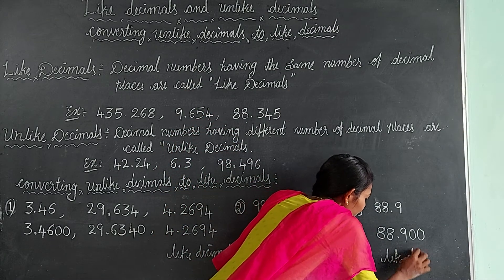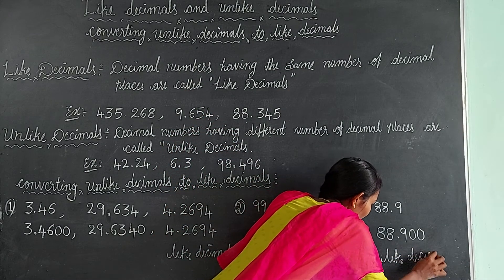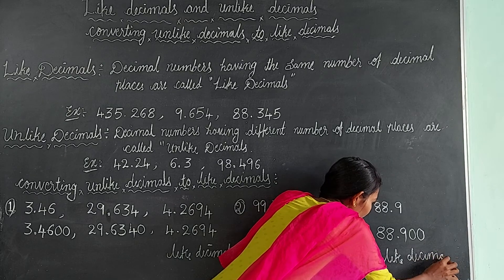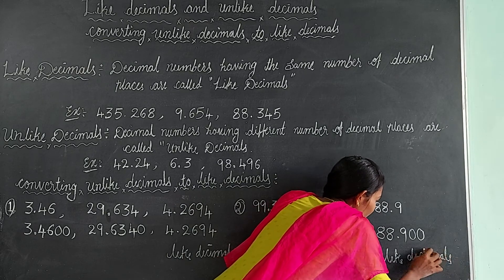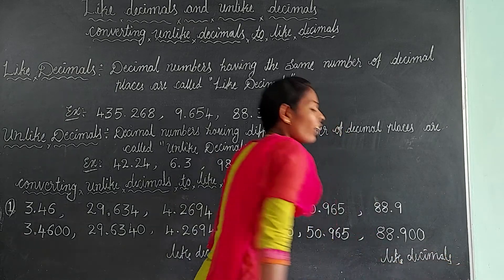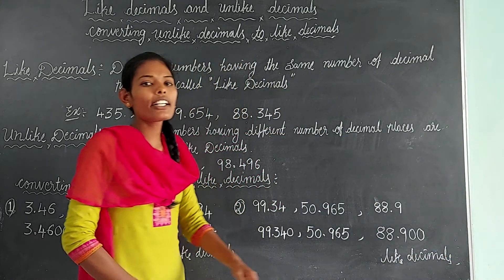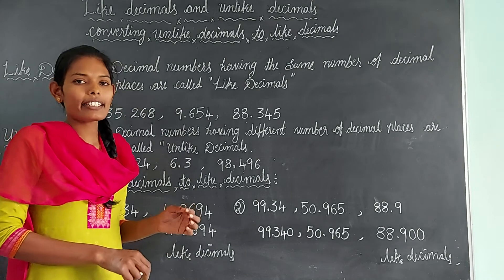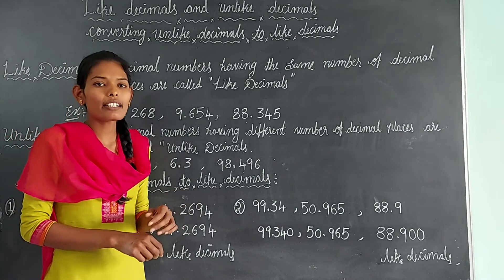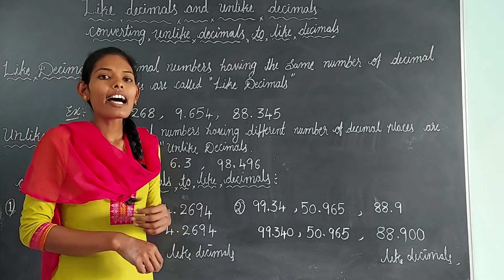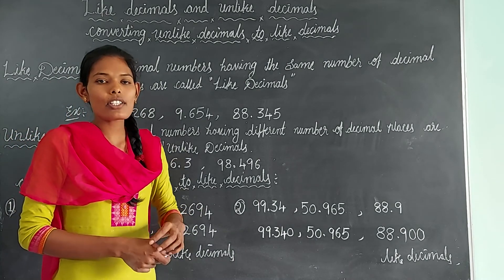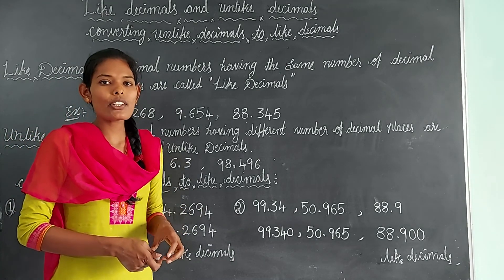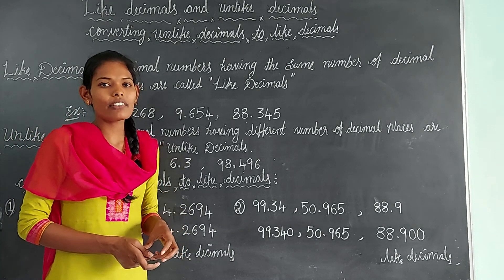Are you all understanding what are like decimals and unlike decimals? Hope you all understood. Thank you, everyone.